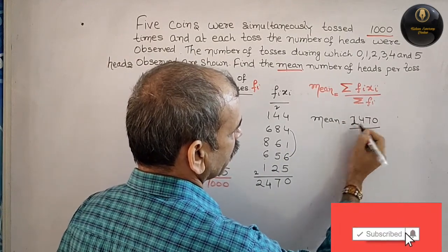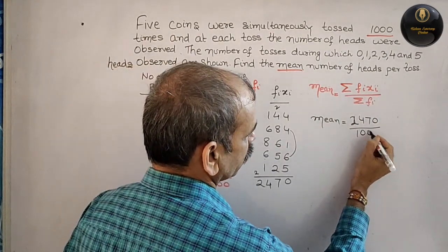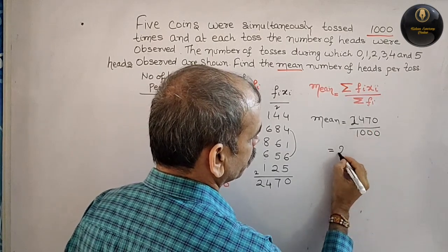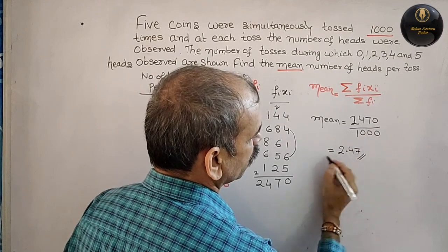Mean equals sigma fi times xi by sigma fi, which is 2470 by 1000, that equals 2.47. So 2.47 is your mean.